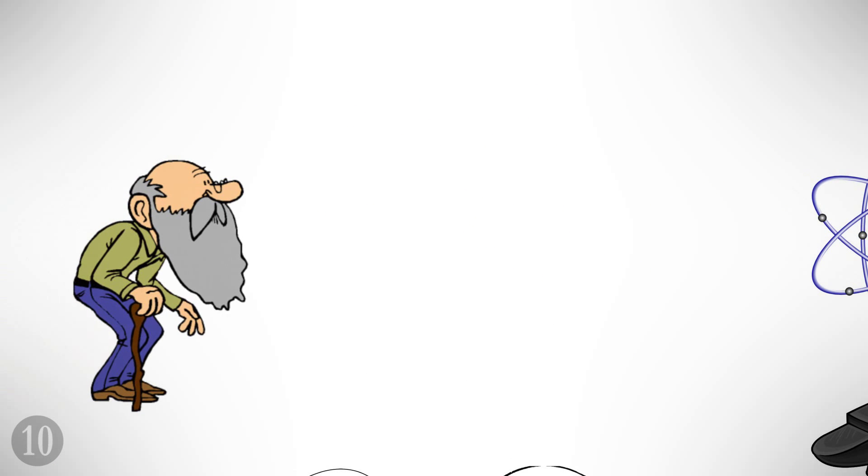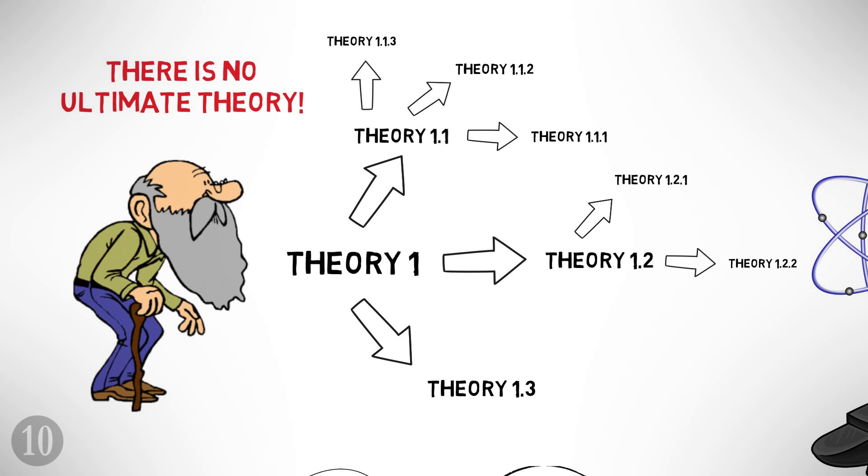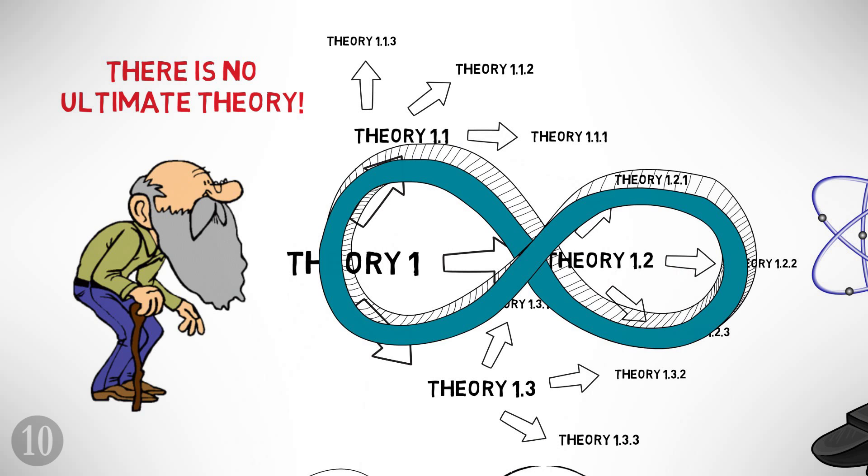Number ten: Karl Popper, who Steven Weinberg has called the Dean of Modern Philosophers of Science, once suggested that there may not in fact be an ultimate theory for physics, that rather, every explanation may require a further explanation, producing an infinite chain of more and more fundamental principles.